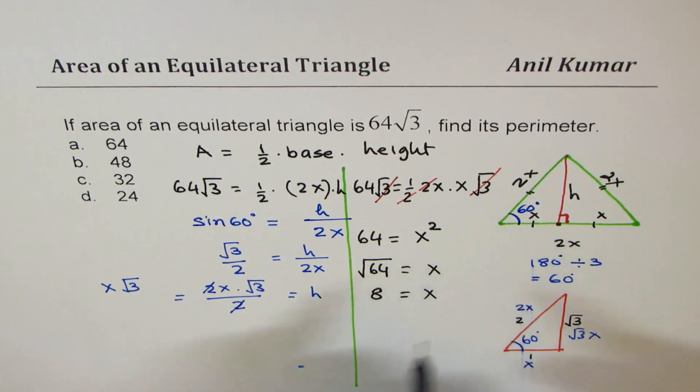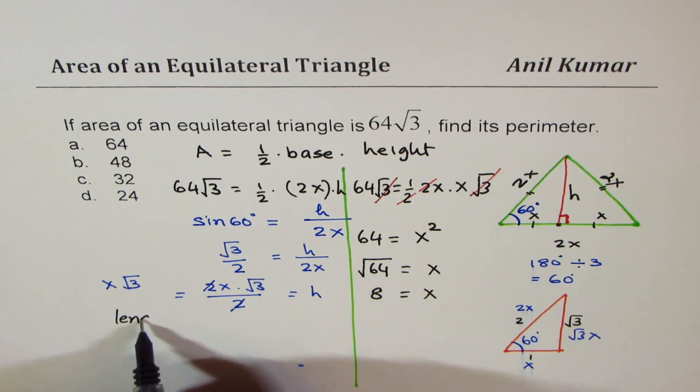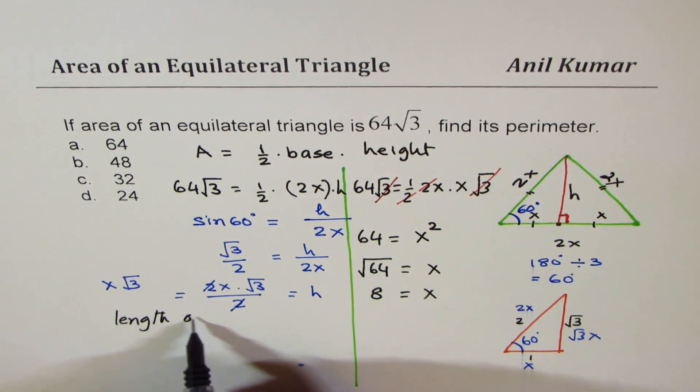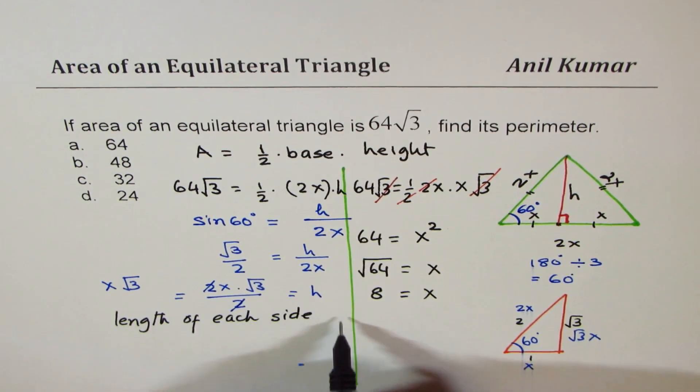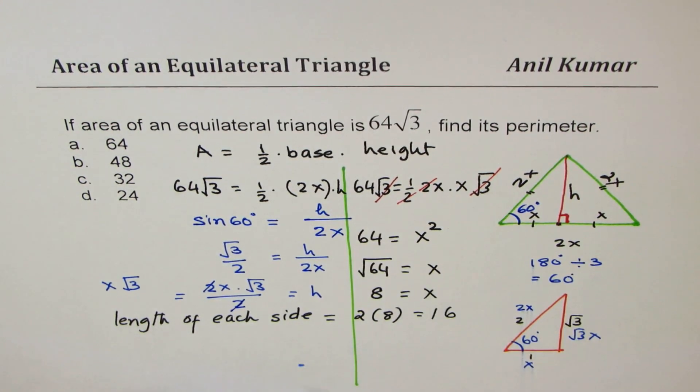So what is the length of each side? Now length of each side, there are three equal sides, equals to 2 times 8, which is 16 units.